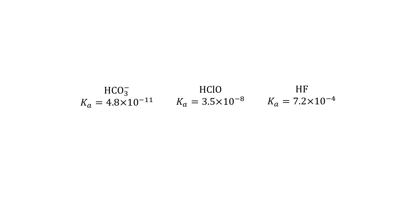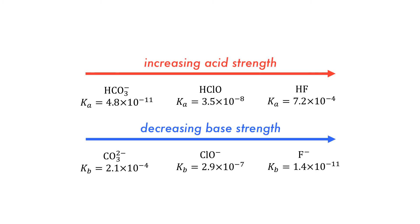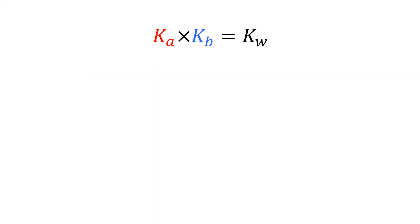Much is often made that as acid strength increases, the strength of its conjugate base decreases. Indeed, these properties are related. The product of Ka and Kb for a conjugate acid-base pair is equal to Kw.